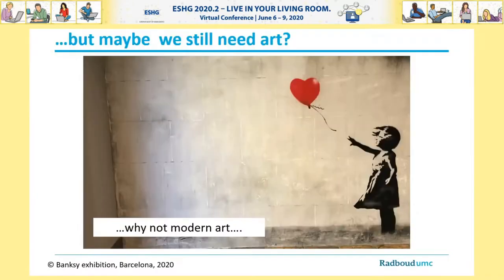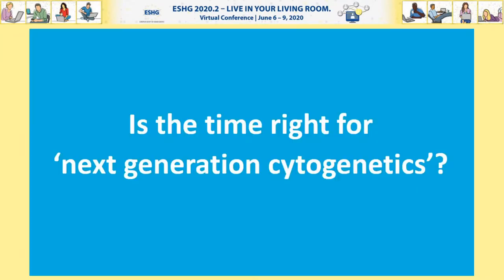This brings me back to my initial analogy — it could be that we still need art, but maybe the time is right for modern art. So maybe the time is right for next generation cytogenetics to complement next generation sequencing.